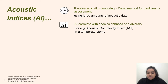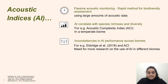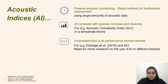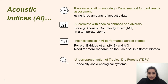For example, the acoustic complexity index was found to have a correlation with avian species richness in a temperate biome. However, inconsistencies are being seen in acoustic indices across biomes. Eldridge et al. found that ACI correlates with avian richness in a temperate biome in the UK but not in a tropical forest in Ecuador. Therefore, more research is needed on the use of acoustic indices in different types of biomes, especially in tropical dry forests and socio-ecological systems, which are highly underrepresented in the body of literature on acoustic indices.